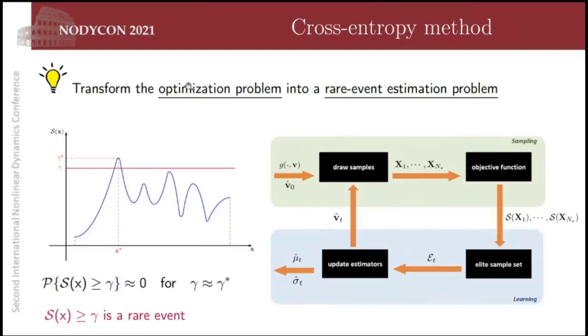So the idea of the cross-entropy method is to transform the optimization problem into a rare event estimation problem. Concentrate your attention on this function here, this very complex function which has a global maximum here. If you draw x at random here, perhaps you will not achieve the maximum at random. But let's concentrate our attention to this region here, close to the maximum. If we restrict the points to that region here, which produces values greater than or equal to this level gamma, this is a rare event. And all the values produced for the function when we evaluate x will be close to the optimum.